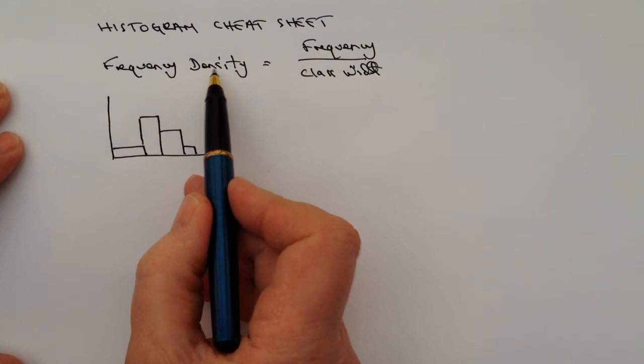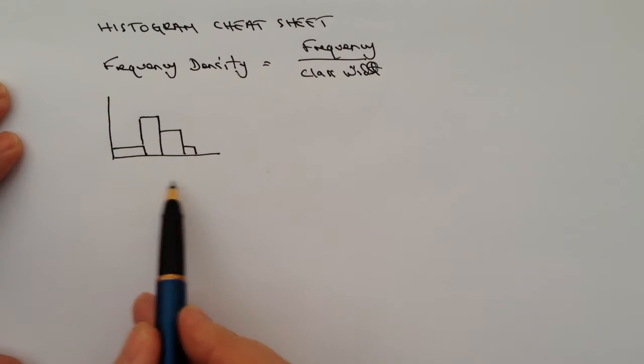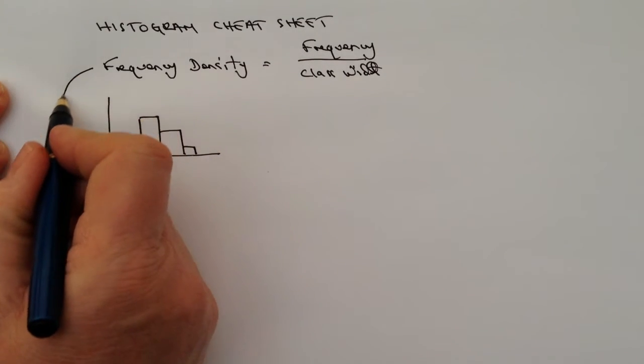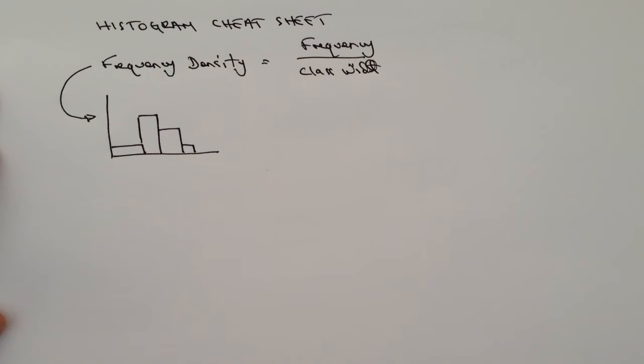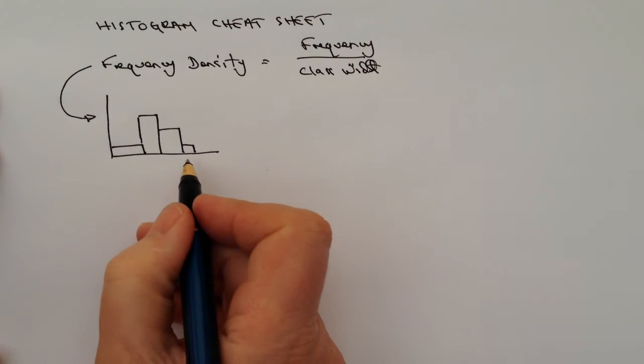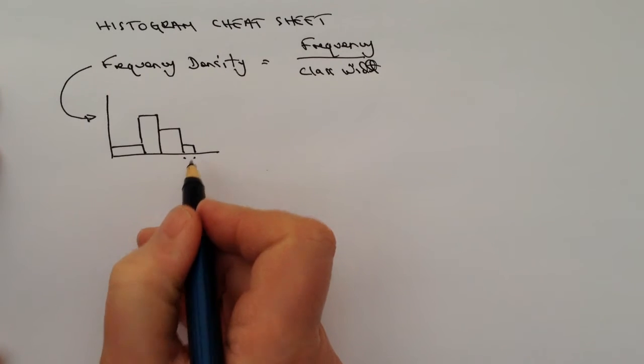The two things represented on this diagram: first, the vertical axis is always the frequency density. Second, you'll see that each of these bars have different widths.